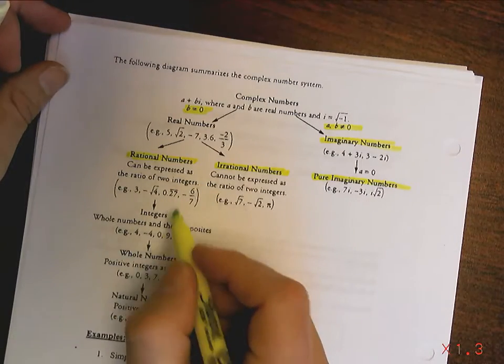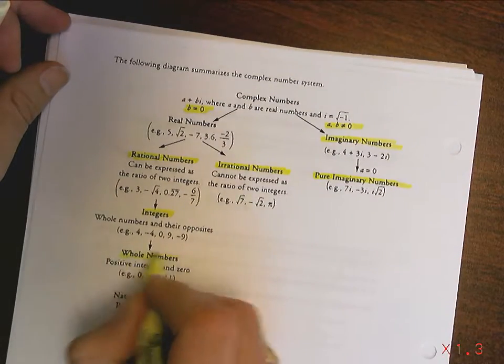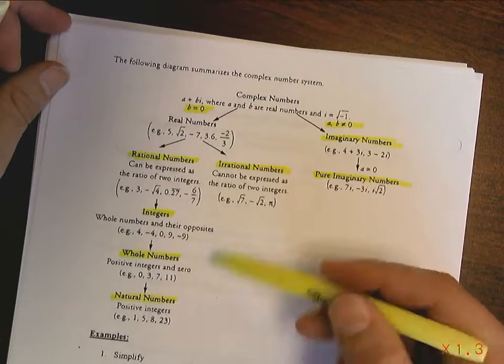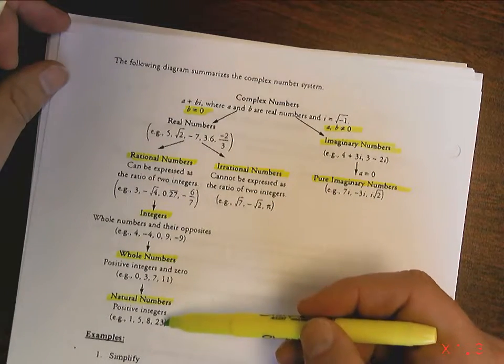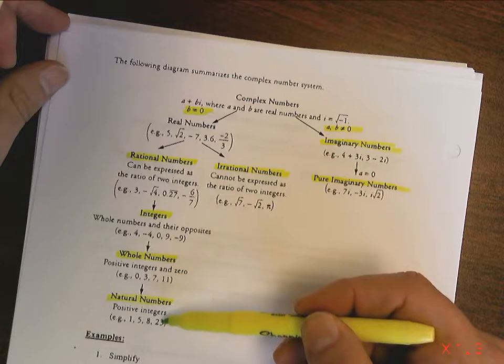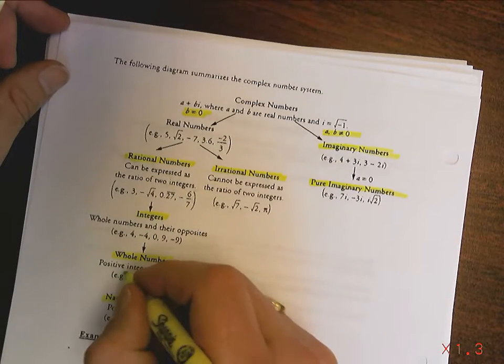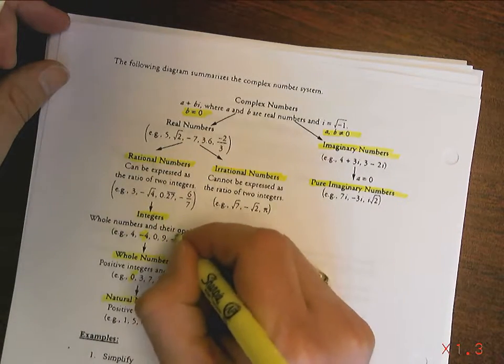Then what we have down here is we have what we call the integers, and then we have the whole numbers, and then we have the natural numbers. So in class, I built this up through circles, showing you how they all built up. But if you take a look at this way, your natural numbers are part of whole numbers. Whole numbers just have the addition of zero. And then you have your integers, which have all the whole numbers plus the addition of the negatives.